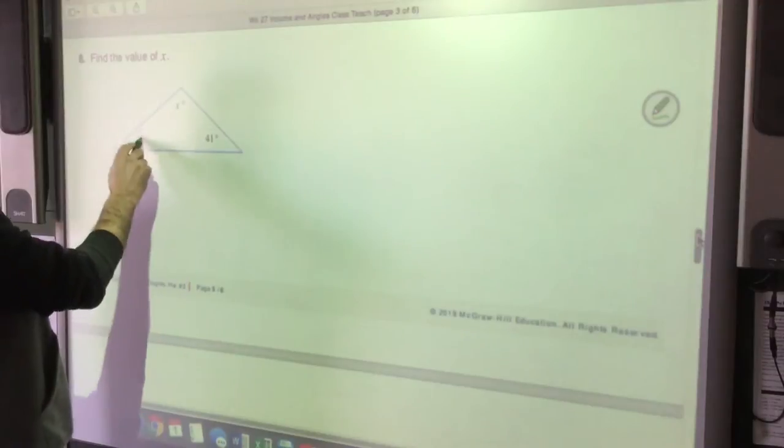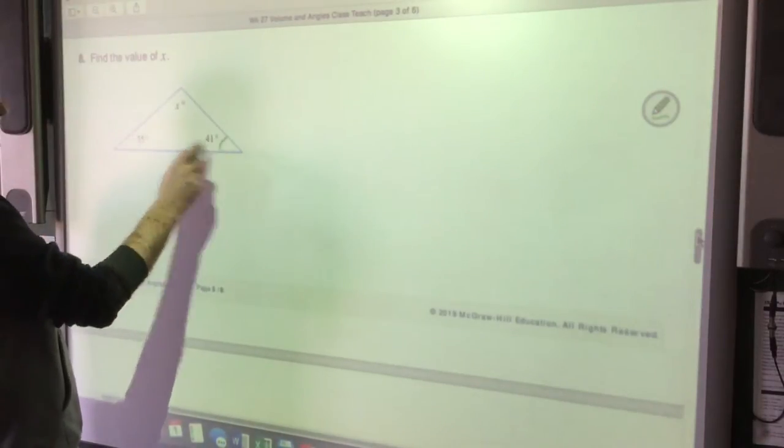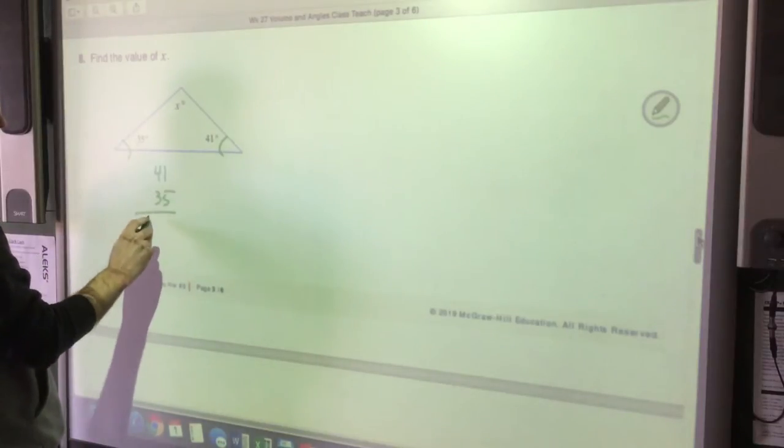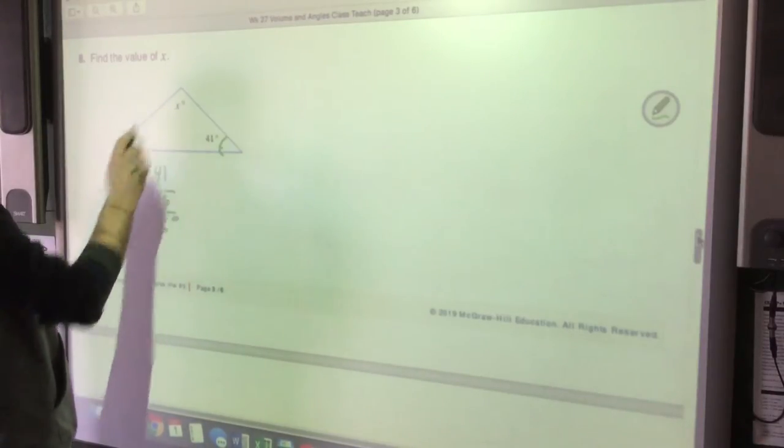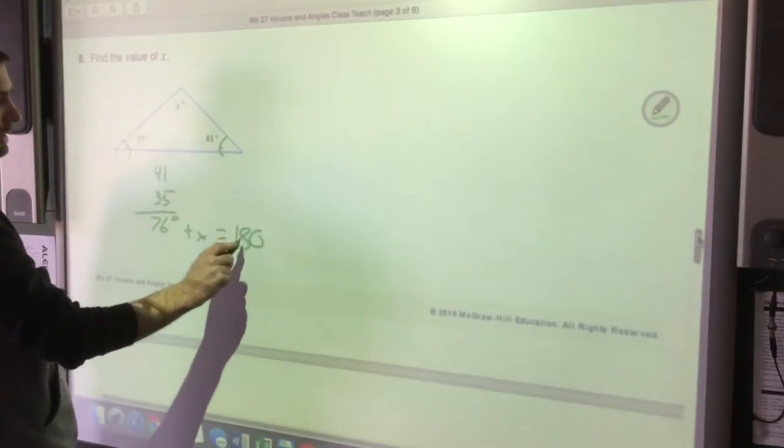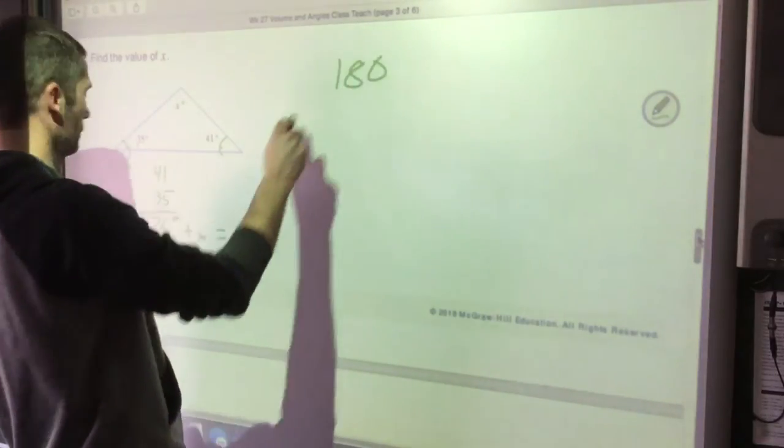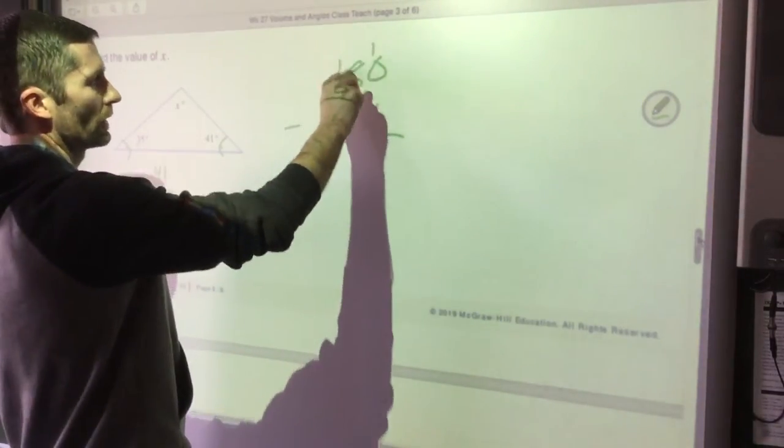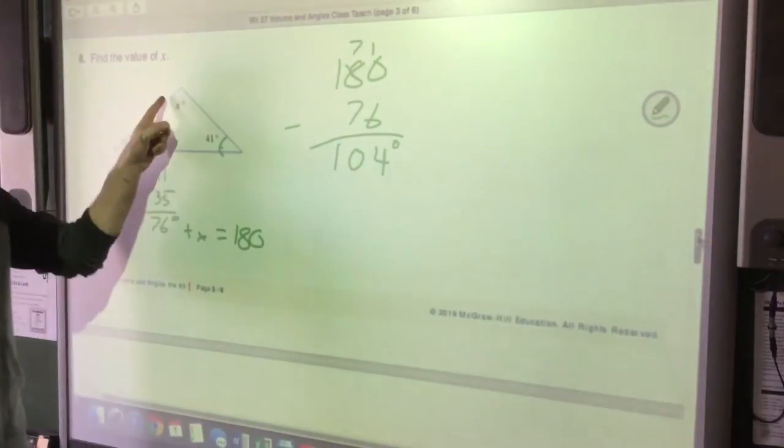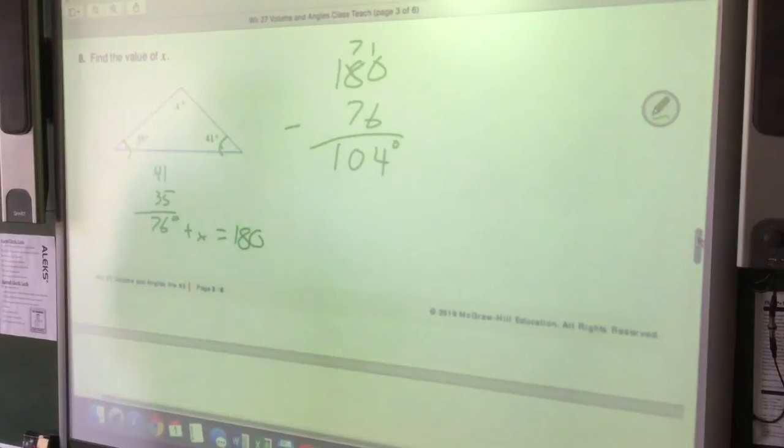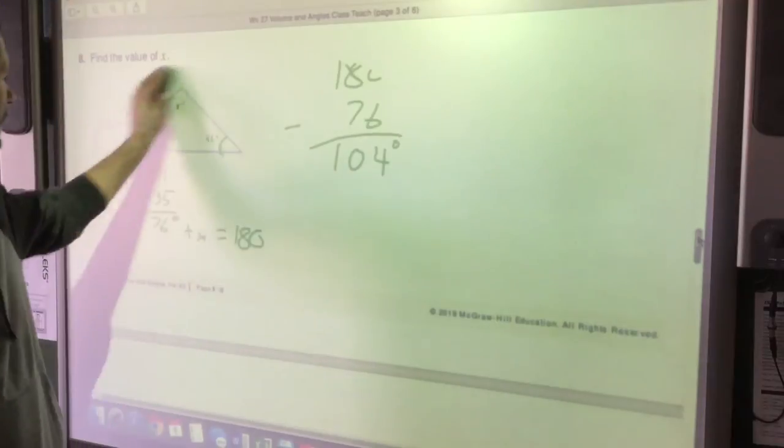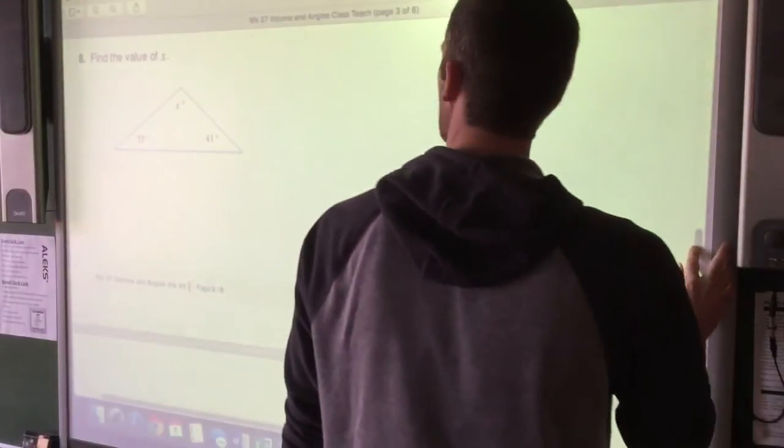Okay, so these have to add up to 180. So far, this plus this, 41 plus 35 is 76 degrees. We got to figure out x. So 76 plus x is going to give us 180. So if we have 180 total, let's subtract 76 from it. We've got to borrow here. The answer is 104 degrees, which makes sense. That looks a little more than 90 degrees. Okay, so all triangles are going to add up to 180 degrees with their interior angles, the angles on the inside.